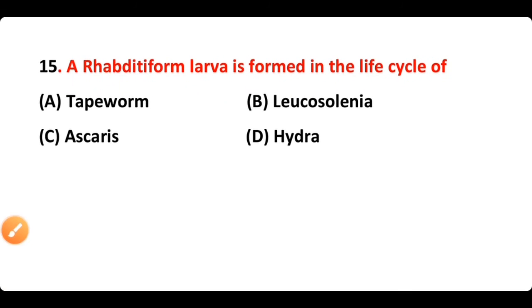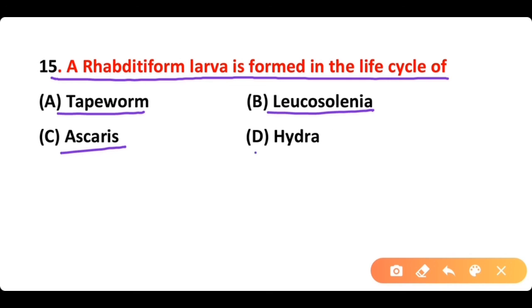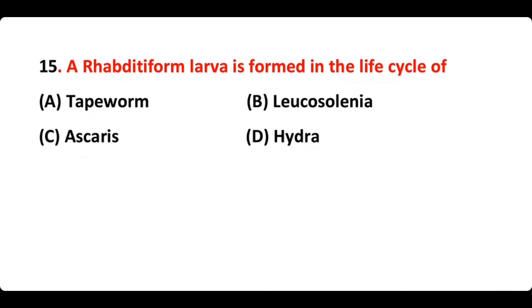Question 15: A rhabditiform larva is formed in the life cycle of: A) a form, B) Leucosolenia, C) Ascaris, D) Hydra. The correct answer is option C. Rhabditiform larva is formed in the life history of Ascaris lumbricoides. These are the 15 most important questions.